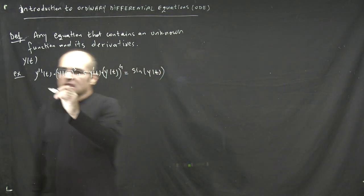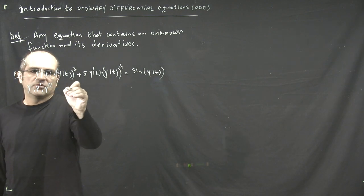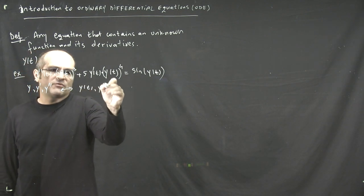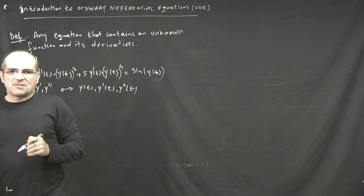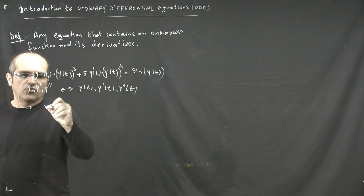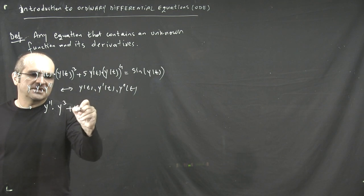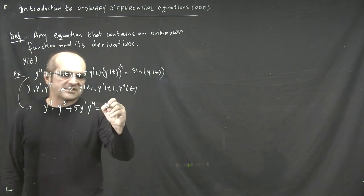So instead, we assume that y, y prime, y double prime really refer to y of t, y prime of t, y double prime of t. And with that being said, this example can be written in a much more compact form as y double prime y cubed plus 5 y prime y to the 4 equals sine of y.